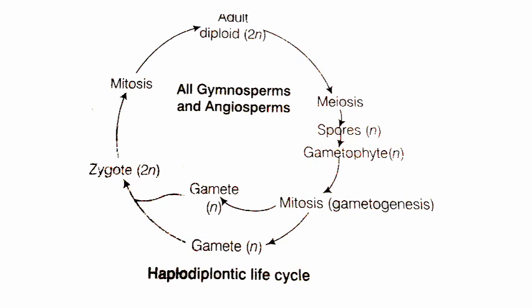In the haplodiplontic life cycle diagram, the adult diploid sporophyte (2n) undergoes meiosis to form haploid spores. These haploid spores germinate into haploid gametophytes. The haploid gametophytes undergo mitosis — gametogenesis — to form male and female gametes, which fuse to form a diploid zygote. This diploid zygote undergoes mitosis to form a diploid embryo, which then develops into a diploid sporophytic plant. Let's check this diagram carefully for better understanding.